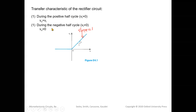During the negative half cycle when VI < 0, VO = 0. The transfer curve is a horizontal straight line overlapping the negative VI axis.